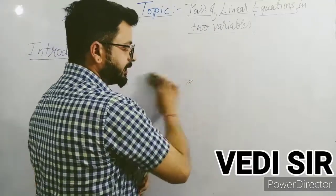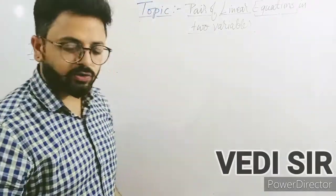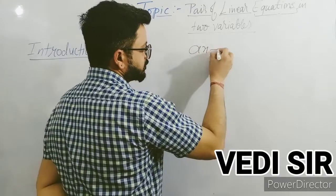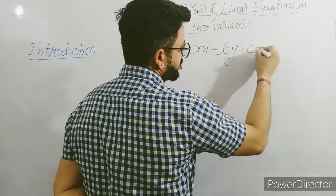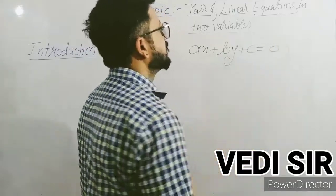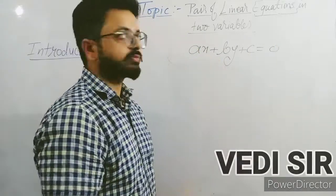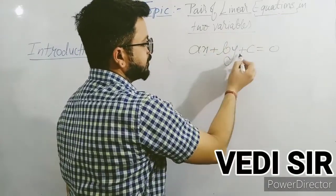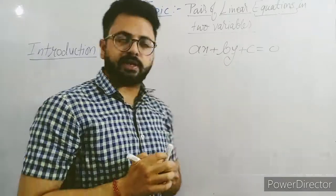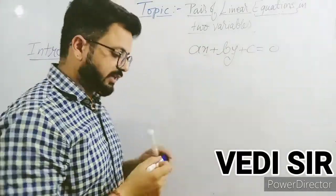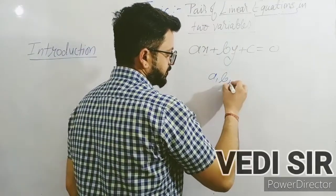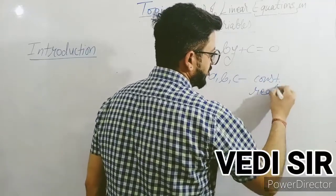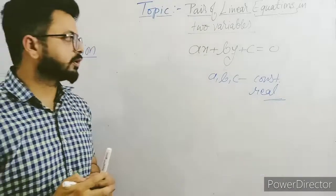Now I am telling you the standard linear equation in two variables: ax + by + c = 0. This is a linear equation in two variables x and y. So if x and y are the variables, then what are a, b, c? A, b, c are any real numbers — we can say real constants.